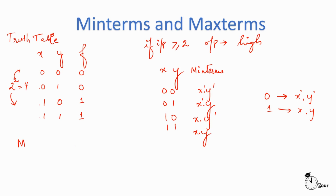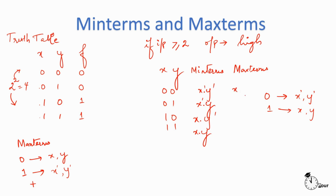Now when I talk about max terms: here when I have zeros I consider them as x or y, and when I have ones I consider them as x bar or y bar. The operator used is the OR operator. So I can represent the same inputs as max terms: x or y, x or y bar, x bar or y, and x bar or y bar. These are the max term representations of the inputs.